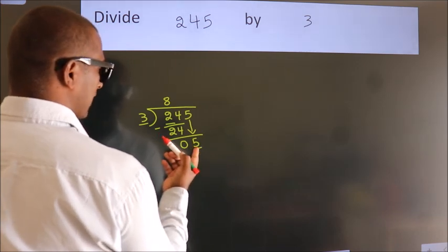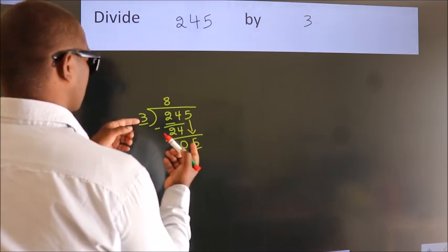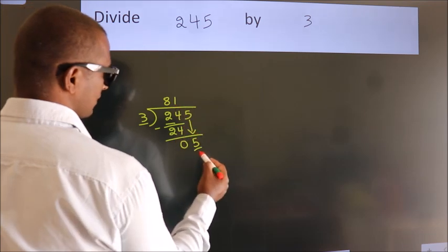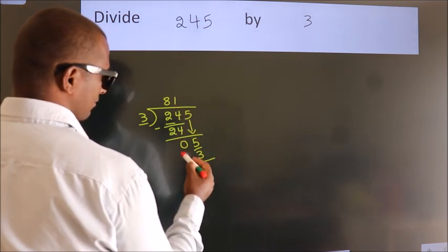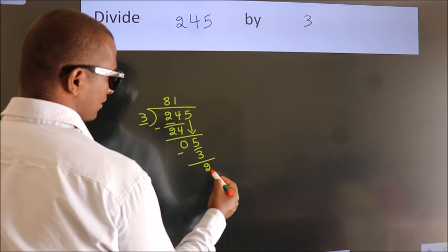A number close to 5 in the 3 table is 3 times 1, which is 3. Now we subtract. We get 2.